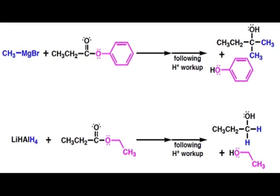Now let's take a look at some examples of acyl substitution followed by addition. When this ester is treated with two equivalents of methyl magnesium bromide, this phenoxide leaving group can be displaced by two methyl groups to create this tertiary alcohol shown here.